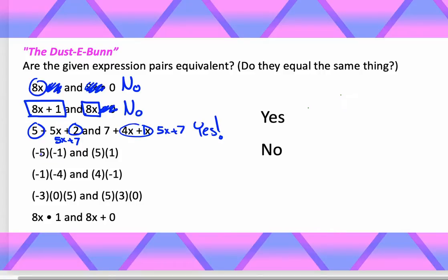Negative 5 times negative 1. The negatives cancel. That turns into a 5. 5 times 1, well, stays 5. So those are equivalent. There's another yes.